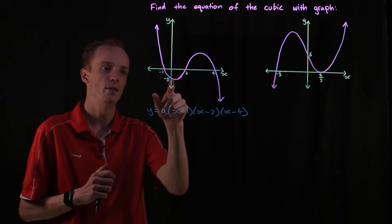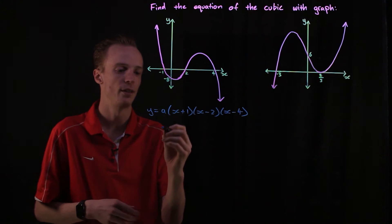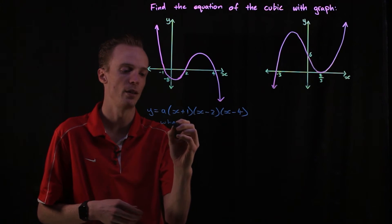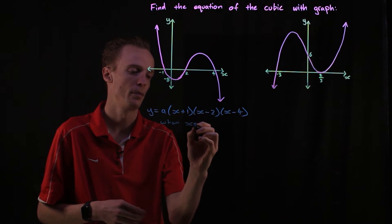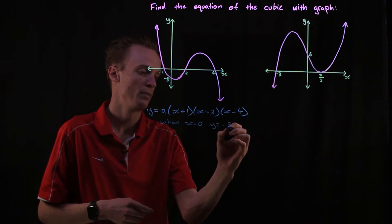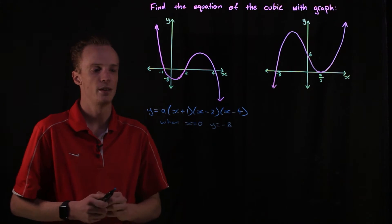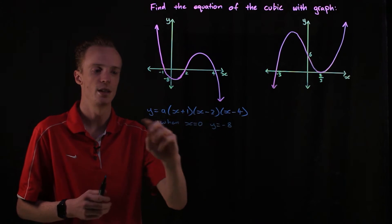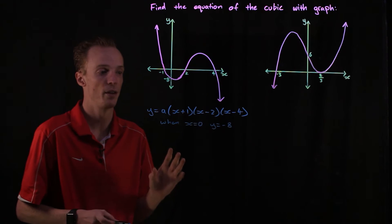The point that we've been given is the y-intercept. So that is saying here is when x is equal to zero, our y here is going to be equal to negative eight. So what we do essentially is we substitute these values in here and we solve for what this a value would actually be.